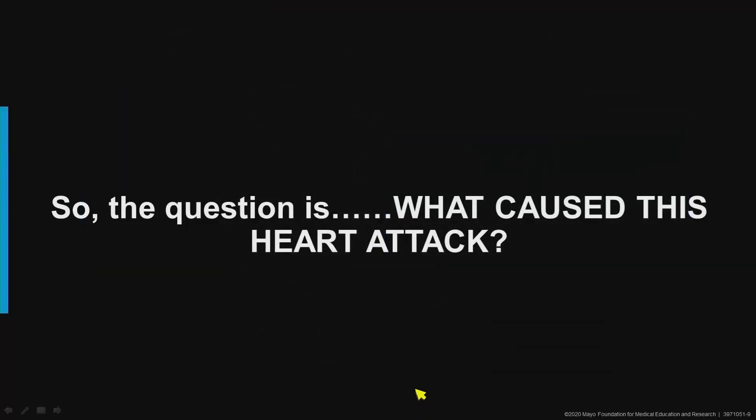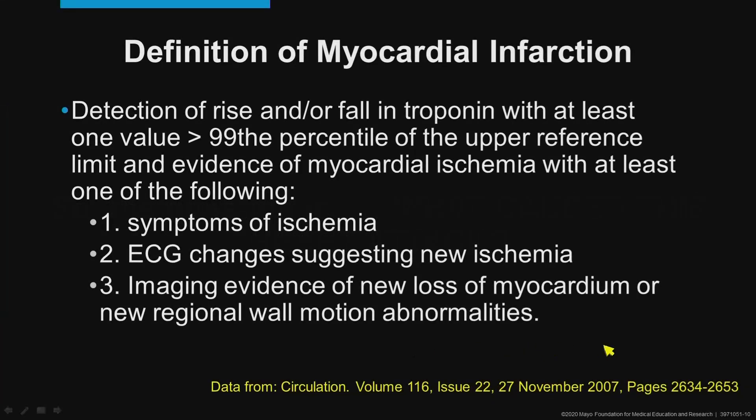So the question is: what caused this heart attack? Some might say it's not a heart attack because the arteries looked fine. But you have to remember that the definition of a myocardial infarction has nothing to do with what we see on coronary anatomy during angiography. The definition is really the rise and fall of the troponin blood test, with at least one value above the 99th percentile of the upper reference limit, and evidence of ischemia on EKG, symptoms suggestive of ischemic heart disease, or imaging evidence of loss of myocardium or new wall motion abnormalities on nuclear testing or echocardiography.